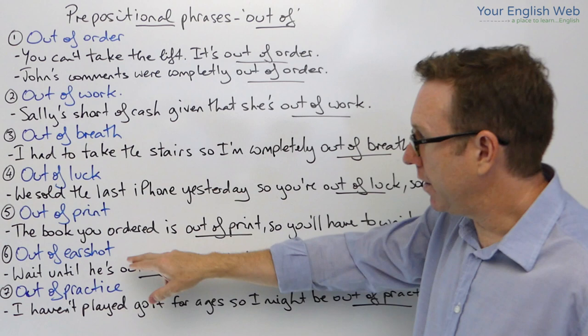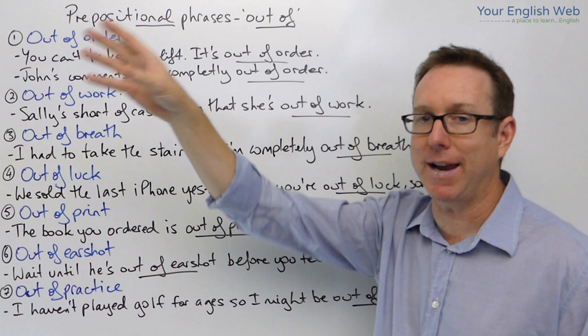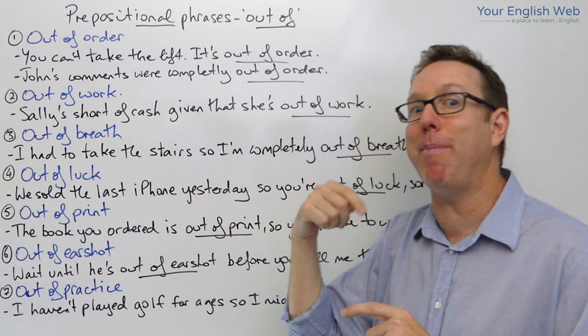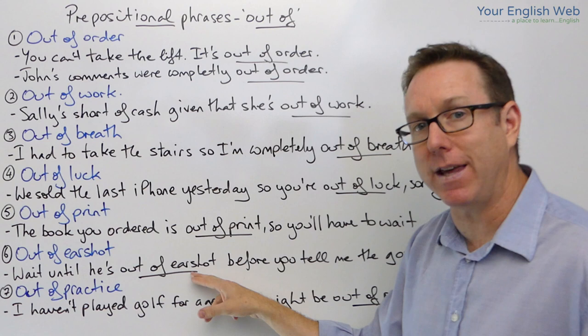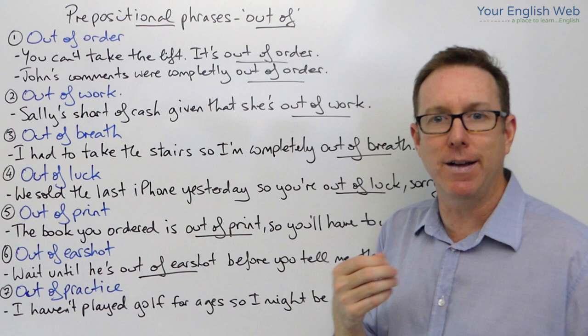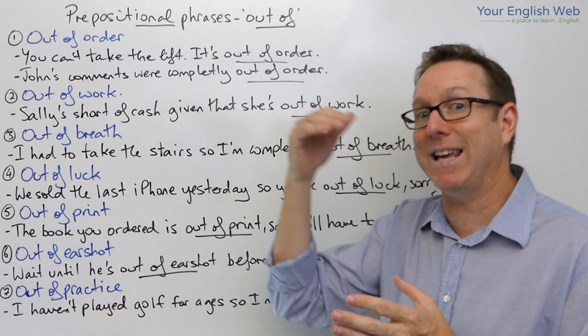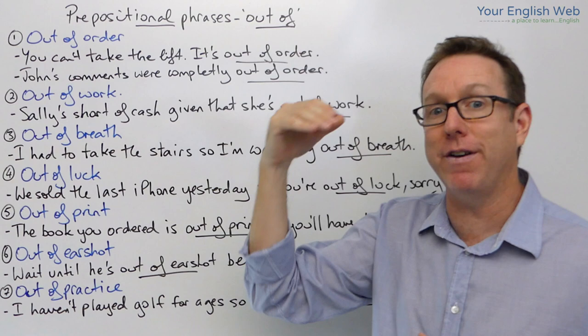The next one is 'out of earshot'. If you are out of earshot, it means that you can't hear. Normally we use this in the context of talking about somebody and not wanting them to hear what you are saying — you wait until they are out of earshot. For example: 'Wait until he's out of earshot before you tell me the gossip.' That means wait until that person is far enough away so that they can't hear what you are saying.